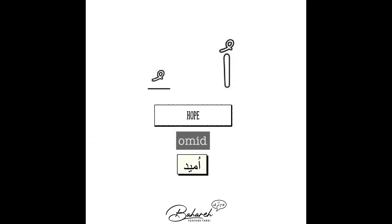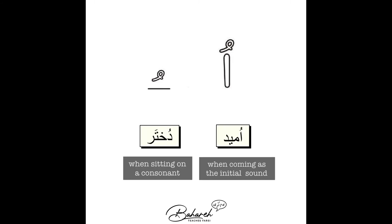There are two forms of the short vowel O depending on their position in a word. Notice the initial sound in this example: Hope — Omid. Thank you for listening.